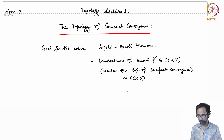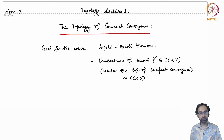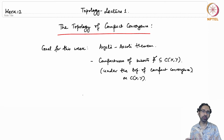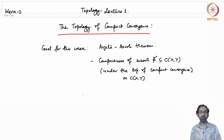This topology is defined on the space of continuous functions from X to Y. We have already seen two different topologies: the topology of pointwise convergence on C(X,Y), and the uniform topology generated by the uniform metric. This third topology — the topology of compact convergence — sits between them: the uniform topology is finer than the topology of compact convergence, which is finer than the topology of pointwise convergence.